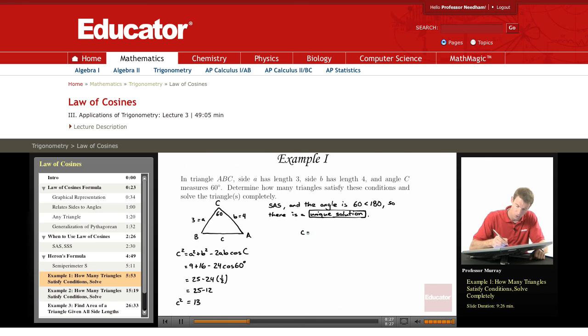So c squared is 13. And so c is equal to the square root of 13. And I can get an approximation for that on my calculator. That's about 3.61. So that's approximately equal to 3.61. So I'll fill that in on my triangle.